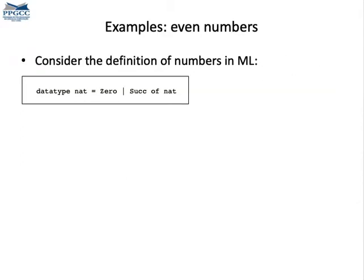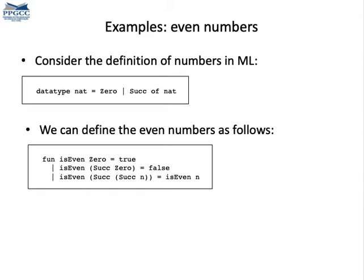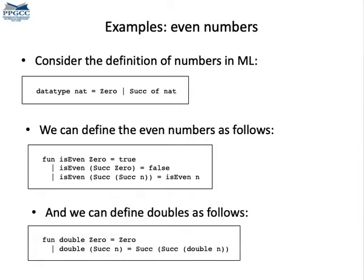And what's interesting is that ordinary induction on natural numbers is just a special case of structural induction. That's because we can define numbers recursively. Here's the definition. So, zero is a number, and if n is a number, then succ n is also a number. From this definition, we can define predicates. For instance, to test if a number is even. So, zero is even, and if n is even, so is succ of succ of n.